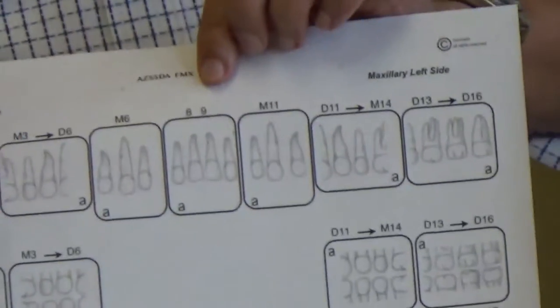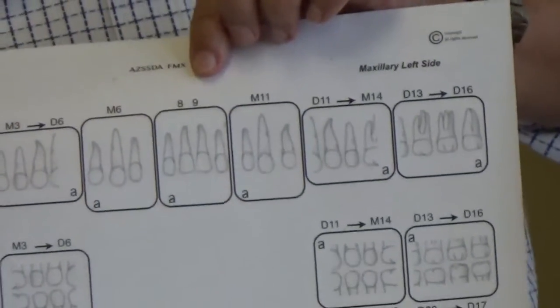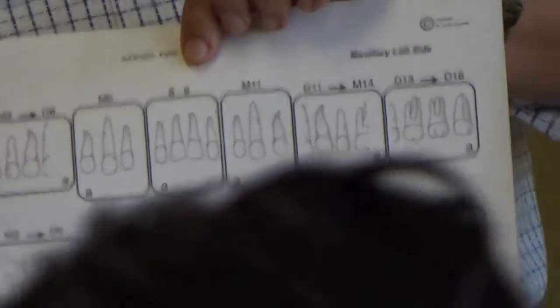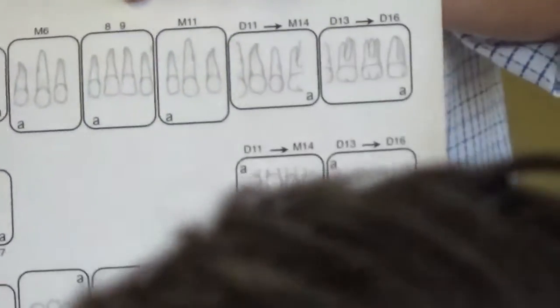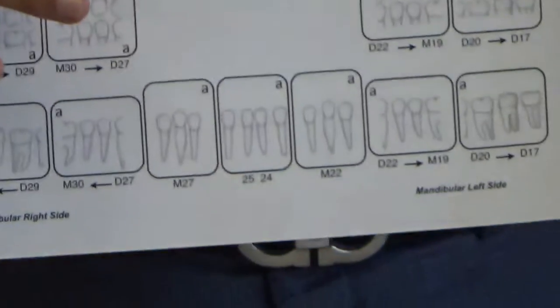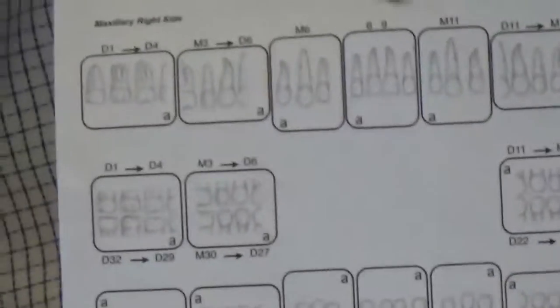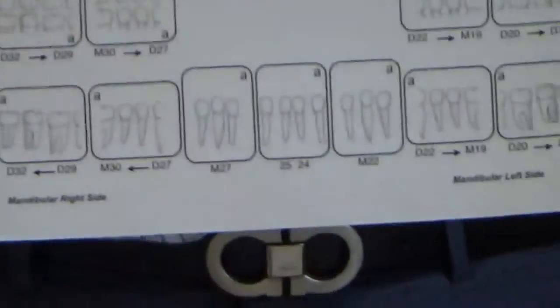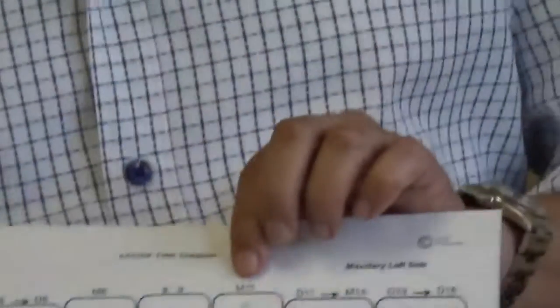On the second PA, you want to get at least the mesial surface of tooth number three to the distal surface of tooth number six, which is your upper right canine.